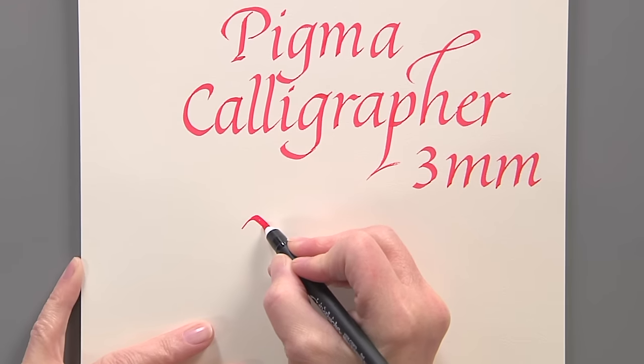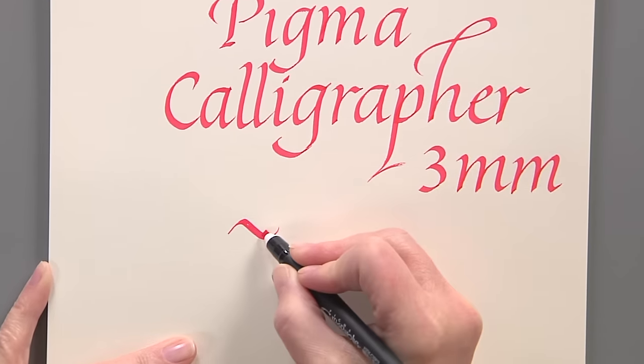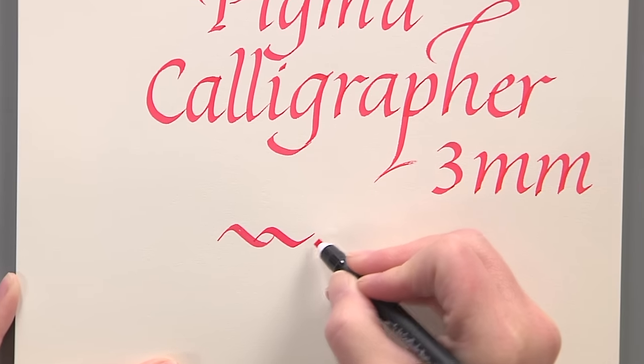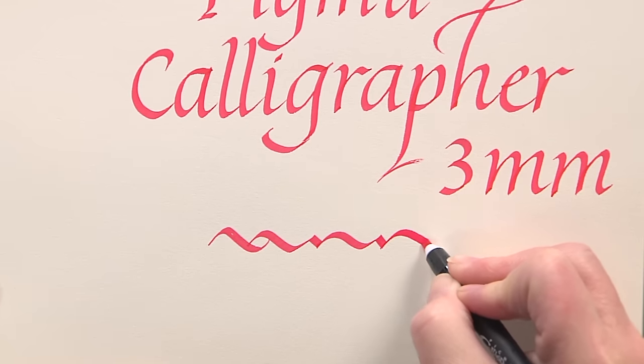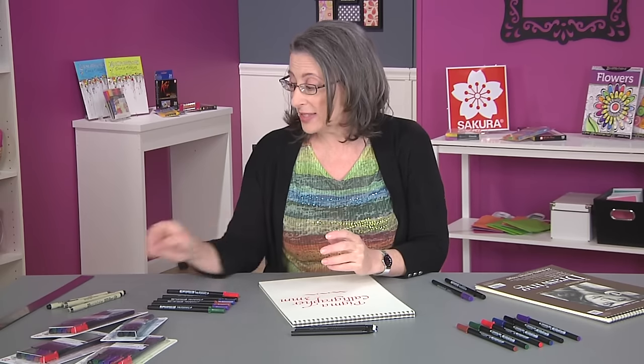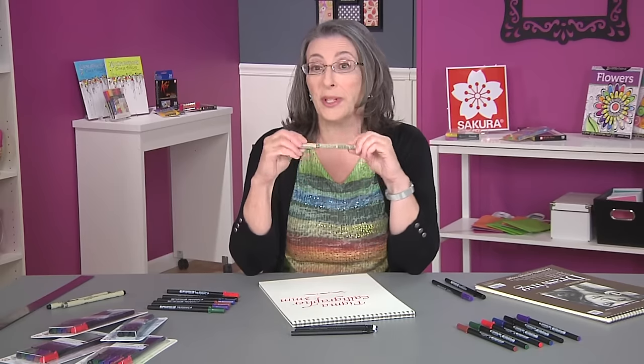What's awesome about the Pigma Calligrapher is that it has a hard nylon tip, and no matter how long I use it, it always gives me a clean, crisp, delightful edge to write with. The exciting thing about the Pigma Calligrapher to me is that it has the same rich, dark, archival, waterproof ink that is in my all-time favorite tool, the Pigma Micron.